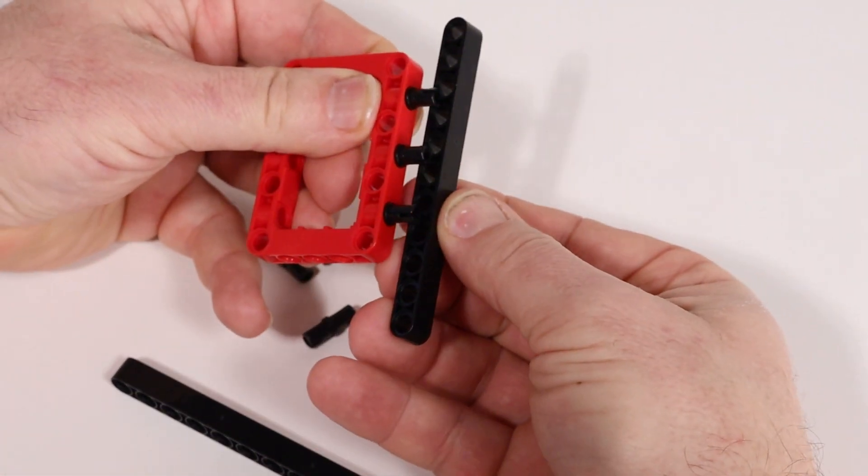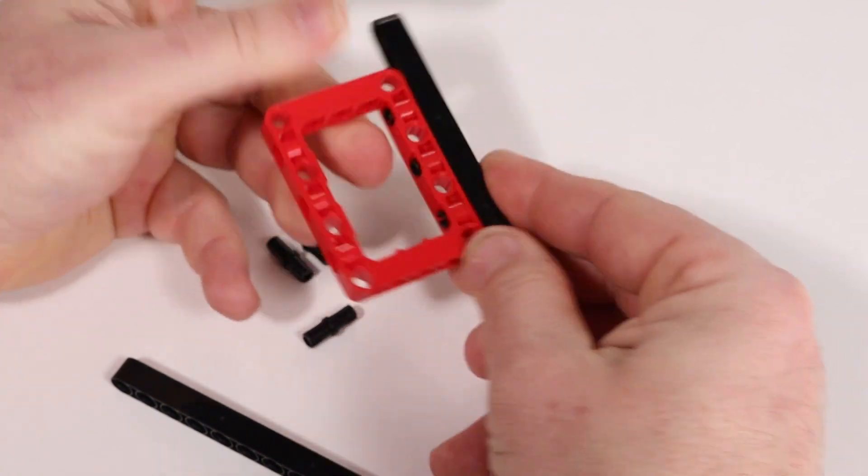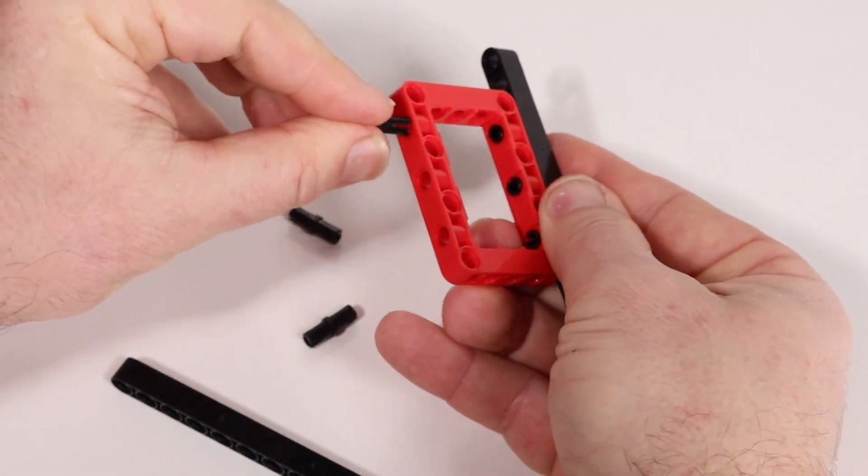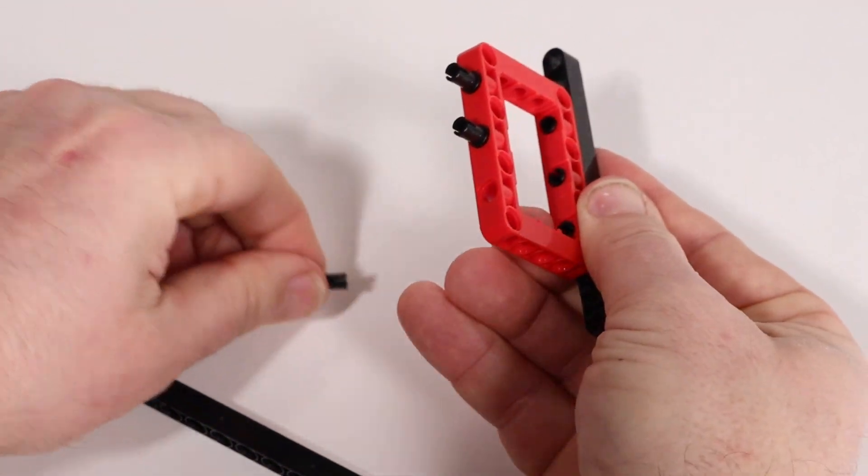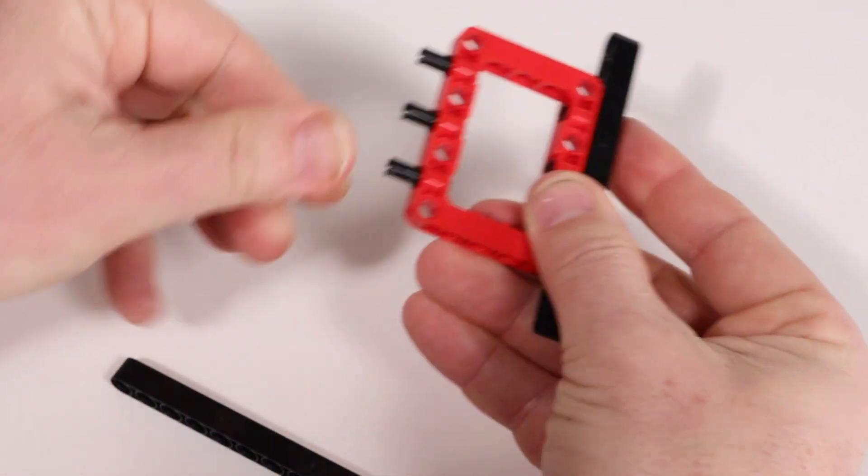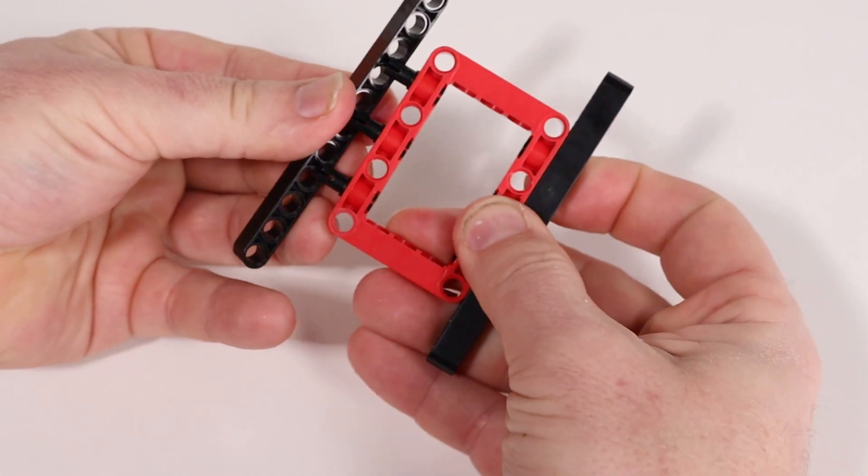Then snap on the black beam centered so there's two holes on either end. Then repeat on the other side. Three short black pins and insert the beam centered with two holes on either end.